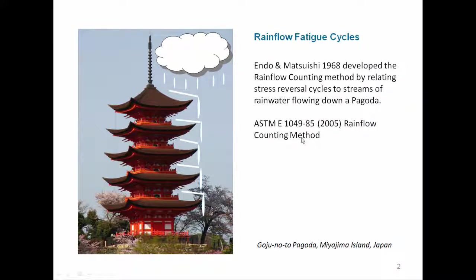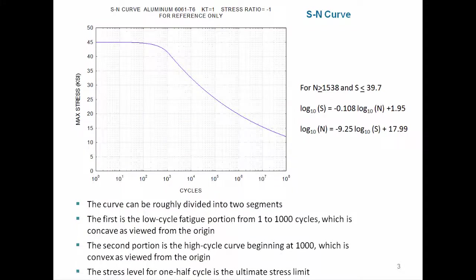Any time we do a fatigue analysis, at least for certain types, we need an SN curve. The one I'm showing here is for reference only — it's for aluminum alloy 6061 T6, assuming a stress concentration factor of one and a stress ratio of minus one, meaning the stress oscillates symmetrically about the zero baseline. Along the y-axis is the maximum stress in KSI as a zero-to-peak value, and along the x-axis is cycles. This curve can roughly be divided into two sections.